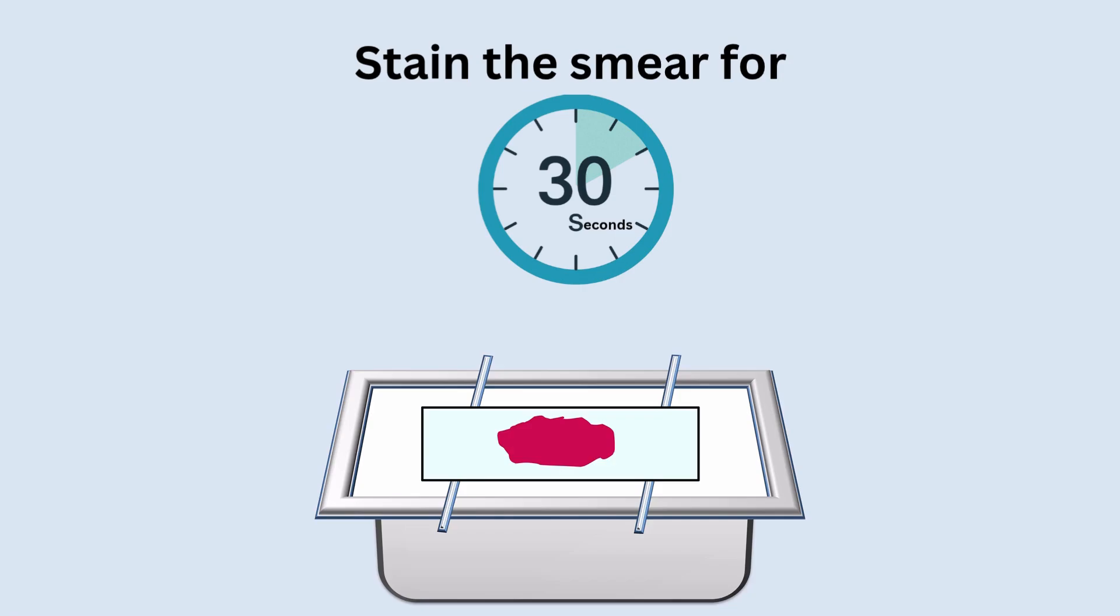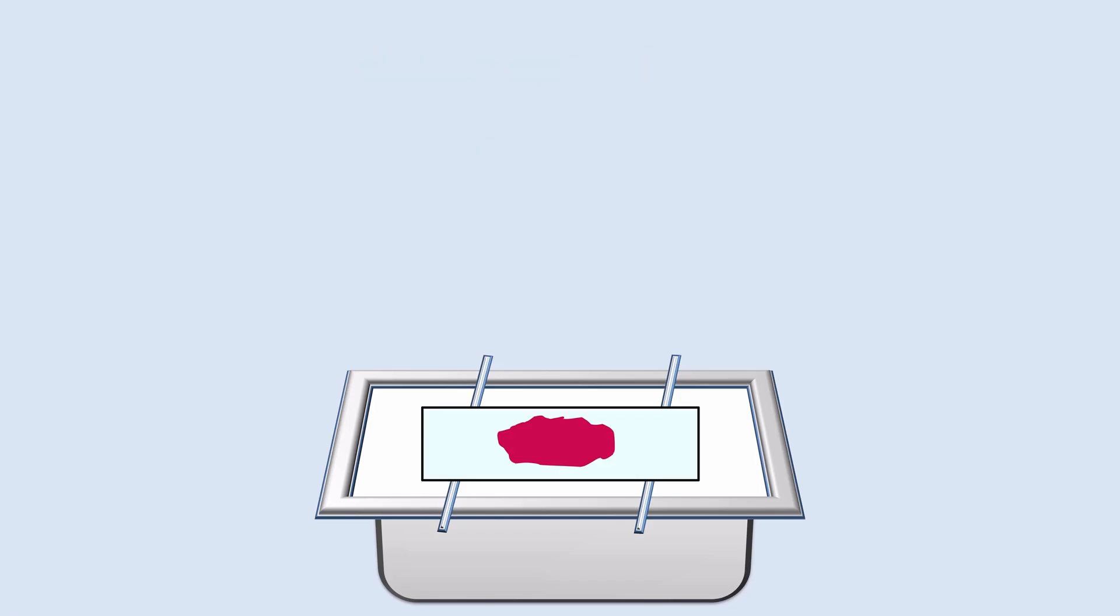This counterstain with safranin stains vegetative cells pink or red, but the endospores stay green. After the staining time is complete, we need to wash excess safranin stain from the slide using tap water.